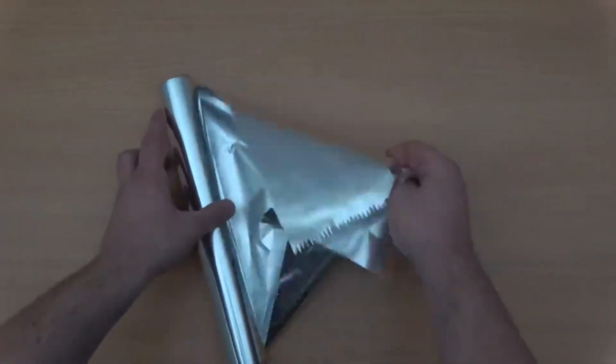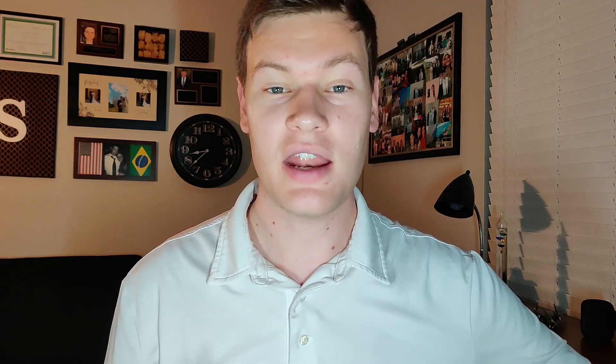Building upon this knowledge, an engineer named George Cayley would go on to develop what's known as a cambered airfoil. An airfoil is actually the shape of a wing, and a typical airfoil looks something like this. With this knowledge in hand, we can apply what we learned from Bernoulli — from water to air — and that's exactly what engineer George Cayley did. He applied Bernoulli's principle to the wing of an aircraft.